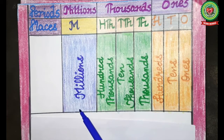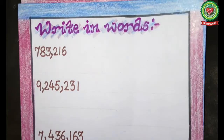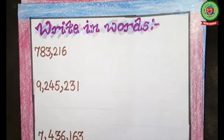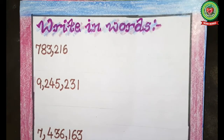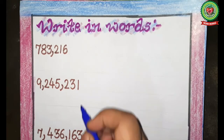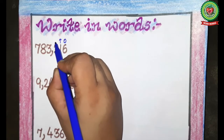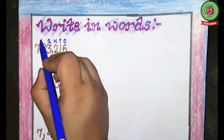We will read this place value table as: ones, tens, hundreds, thousands, ten thousands, hundred thousands, and millions. Now let's start writing in words. The first step is to write down the place value table — the international place value table. So let's write down: ones, tens, hundreds, thousands, ten thousands, and hundred thousands.